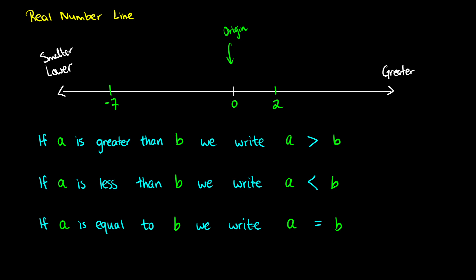Because we have a number line and an order, we can compare numbers based on their position. If we have two numbers A and B and A is greater than B, we write A > B using this symbol — the side that opens up points to the larger number, or the arrowhead points to the smaller number. So we could write that 2 is greater than negative 7, or even 0 is greater than negative 7, because 0 and 2 are both to the right of negative 7 on the number line.